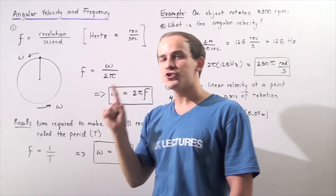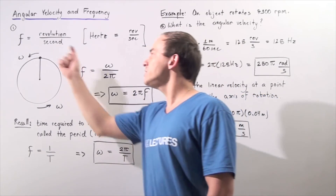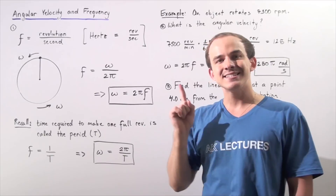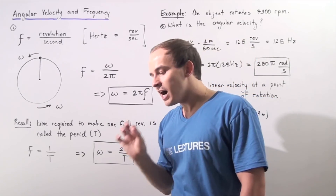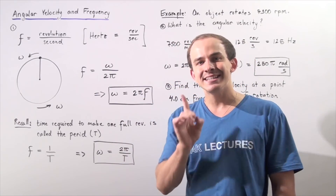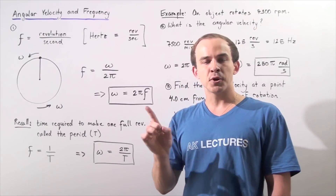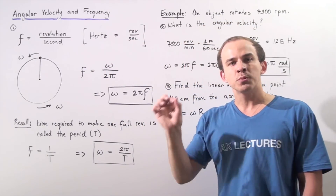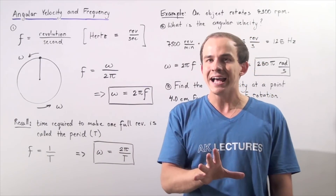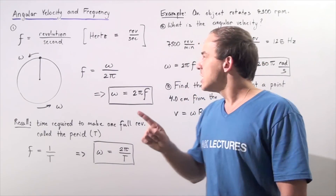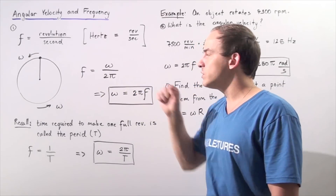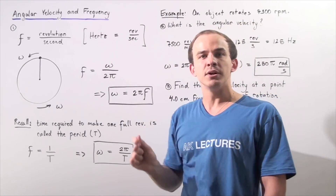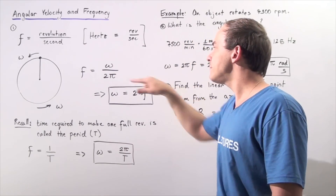Let's suppose our circular object rotates one full rotation — makes one full revolution — every single second. Because one revolution per second is equal to two pi radians per second, we develop the following equation. We can represent frequency in terms of pi and our angular velocity: frequency is equal to our angular velocity omega divided by two pi.